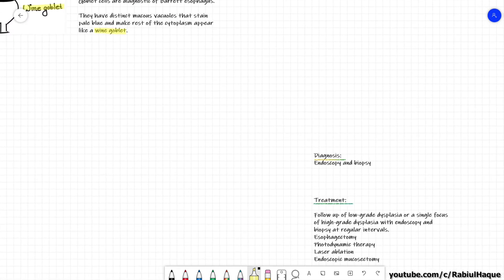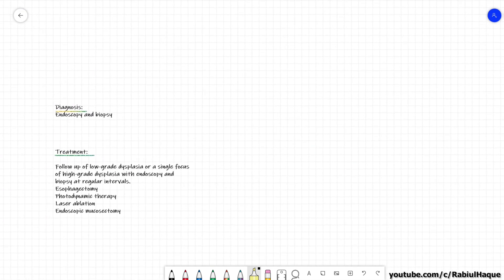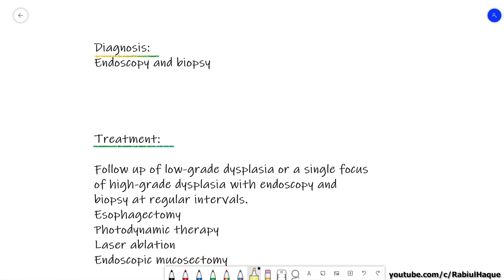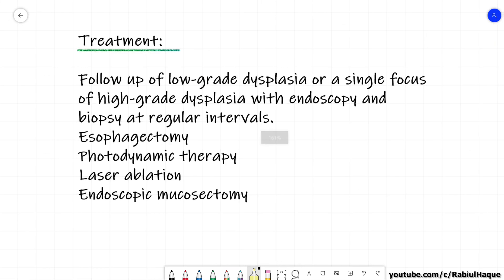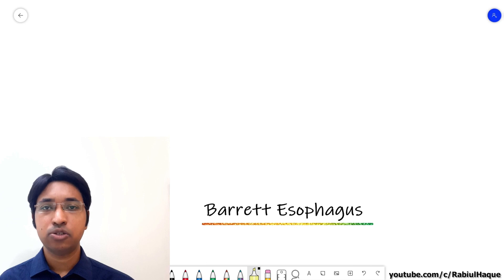So how can we diagnose a case of Barrett esophagus? It can be identified only through endoscopy and biopsy. So what are the treatment options of Barrett esophagus? Follow-up of low grade dysplasia or a single focus of high-grade dysplasia with endoscopy and biopsy, and these types of follow-ups are done at regular intervals. Other treatment options for more severe cases will include esophagectomy, photodynamic therapy, laser ablation, endoscopic mucosectomy, etc.